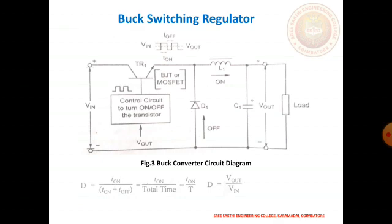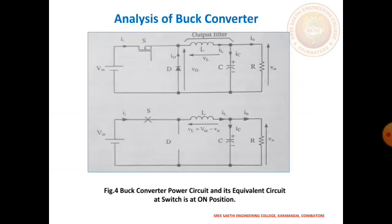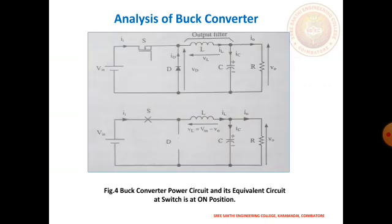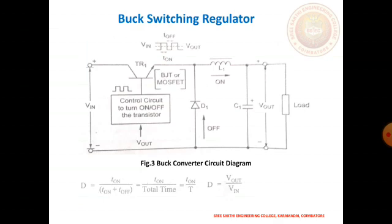Figure 3 shows the buck converter circuit diagram and the corresponding analysis. The basic configuration uses a transistor TR1 with a diode D1, an inductor L1, and a smoothing capacitor C1. The buck converter has two operating modes: what happens when transistor TR1 is turned on, and what happens when TR1 is turned off.